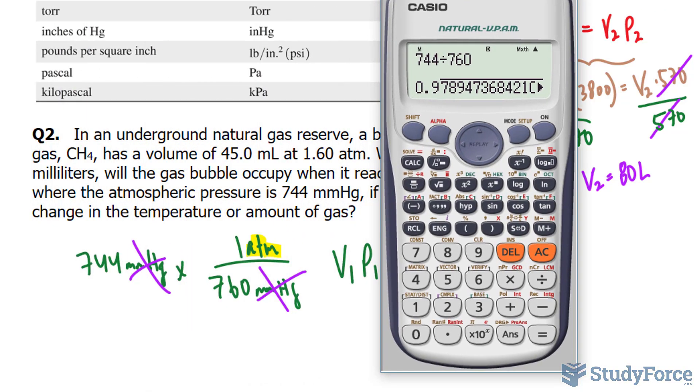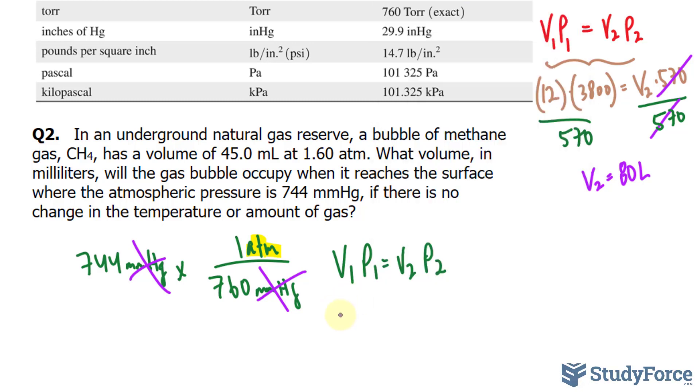Now, of course, this should be to three significant figures, but I'll just keep that number on my screen for now. I'll write down 45.0 milliliters, and the pressure unit was 1.60 atmosphere.